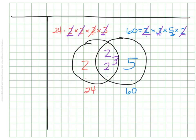Here's how we can use it. If I want to find the greatest common factor, I can look at the section that they share in the middle, and see what they have in common. They have a 2 times 2 times 3 in common. Well, 2 times 2 is 4, times 3 is 12. Their greatest common factor is 12, and I was able to find that without even having to make any lists — I was just able to look at what they shared in this Venn diagram.